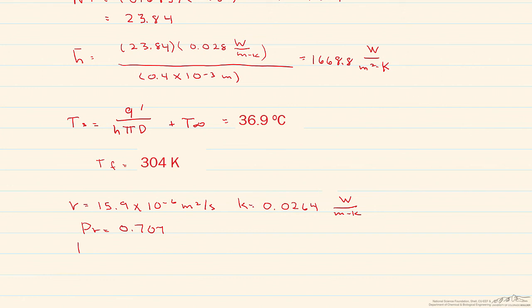And from that we get a Reynolds number that's slightly smaller, 1897. However, our constants C and M will stay the same because they're in the same range. And it gives us a Nusselt number of 20.4, which then gives us an H bar of 1351 watts per meter squared K. And our surface temperature is equal to 39.7.